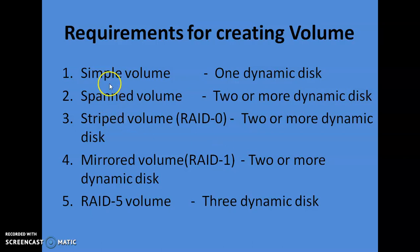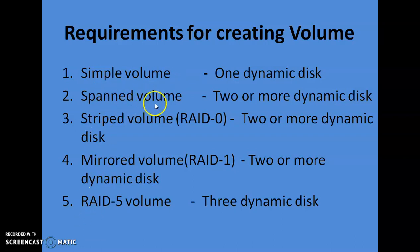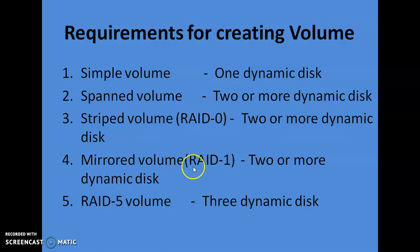There are 5 types of volumes we generally create. First one is simple volume, second is spanned volume, third one is striped volume — also known as RAID 0. Fourth one is mirrored volume, RAID 1, and fifth one is RAID 5 volume.